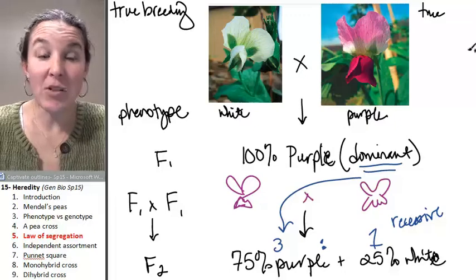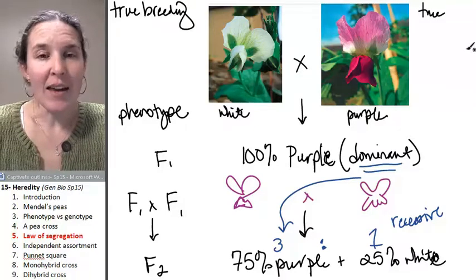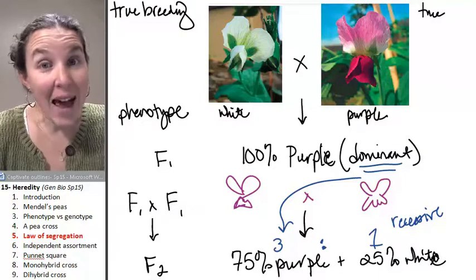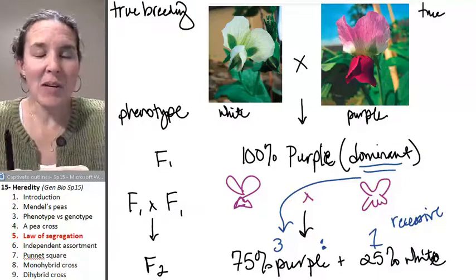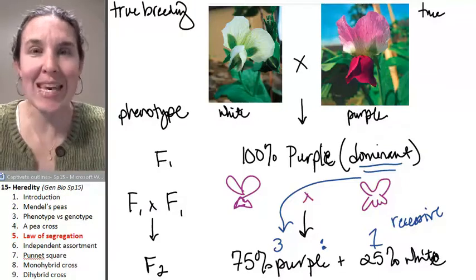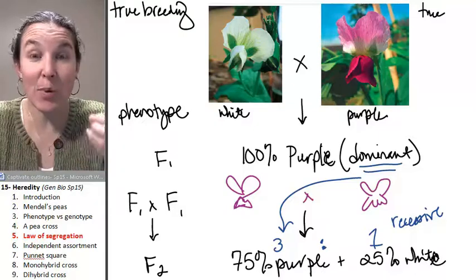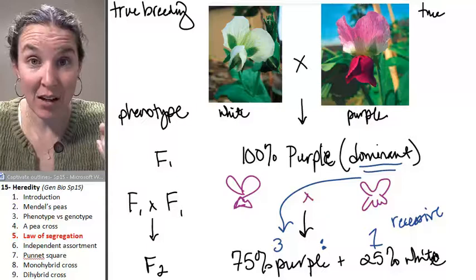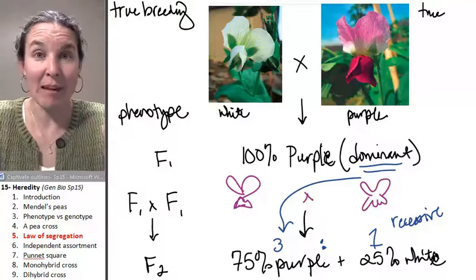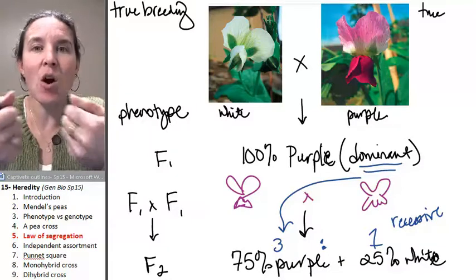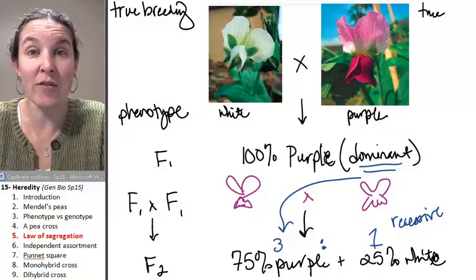Okay, so Mendel figured out that essentially there have to be discrete things in these pea plants that actually separate or segregate during baby making and that then are recombined during fertilization.